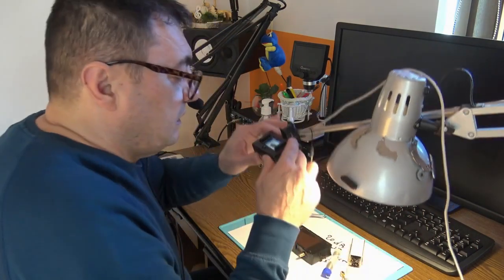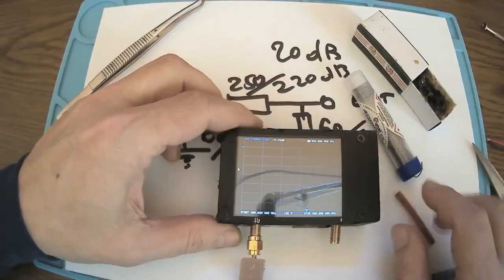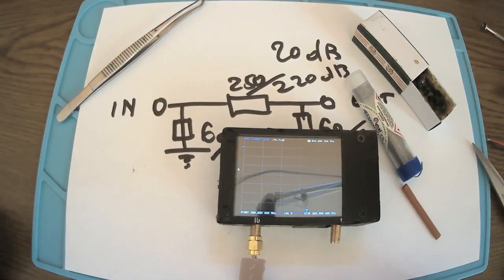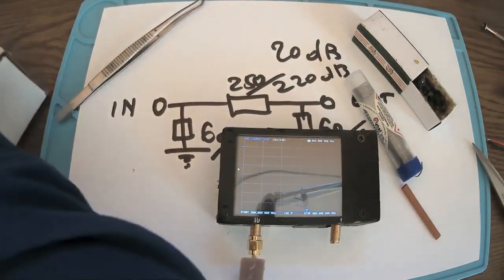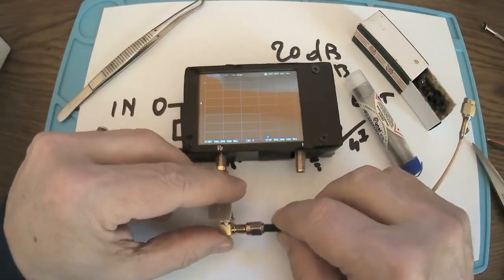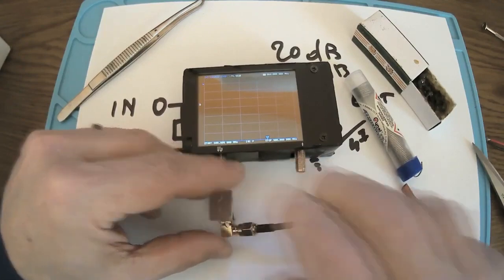I'll just use the nano VNA for now, no computer connection yet. We are on 868, and now all I have to do is to have a cable like this from the attenuator output to this input here.